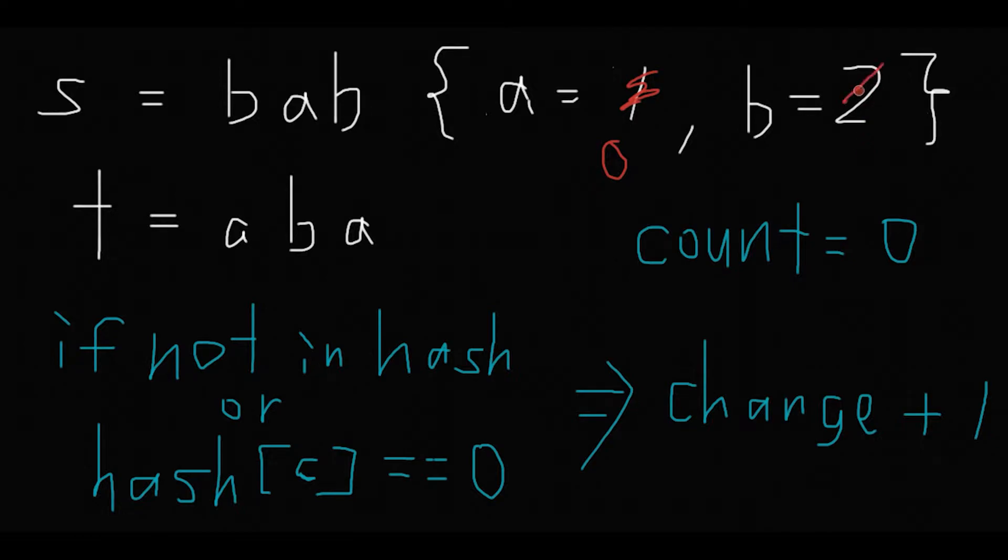And then we find b. If not in hash - hash has a b, or hash b equals 0. But b is 2 right now, and then minus 1, so b should be 1.